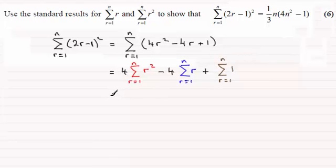When it comes to working out our results, we've got 4 times this standard result that we should be aware of: (n/6)(n+1)(2n+1). If you're unsure of these results, you can find them in the formula book.